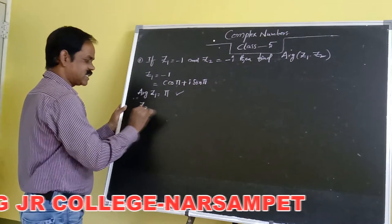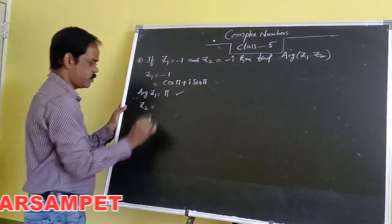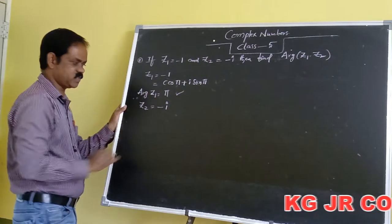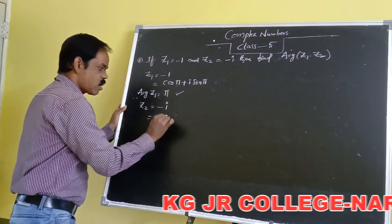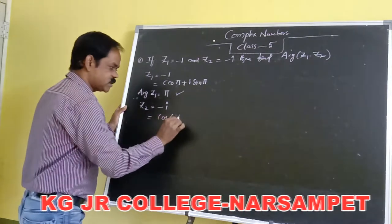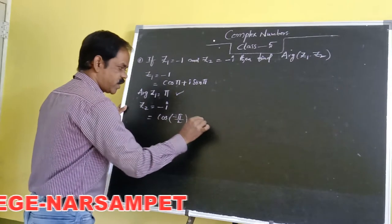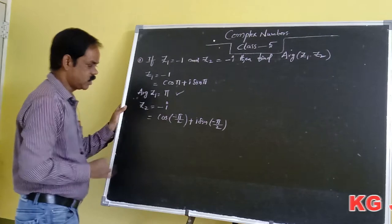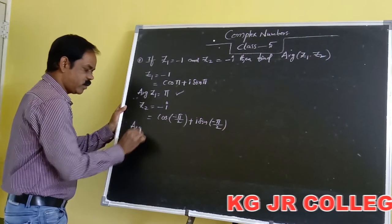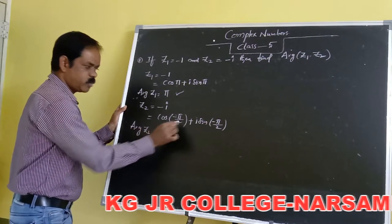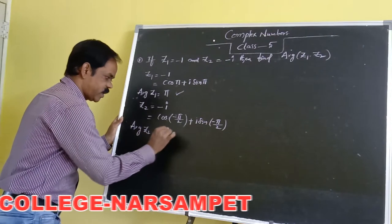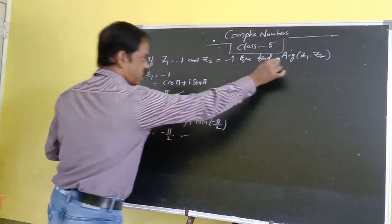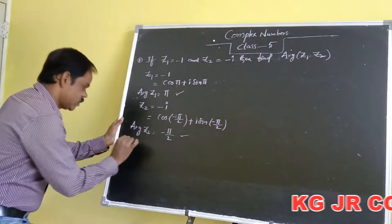Now let us consider Z2. Z2 is equal to minus i. The polar form of minus i is cos of minus pi by 2 plus i into sin of minus pi by 2. So here the argument of Z2 is equal to minus pi by 2.